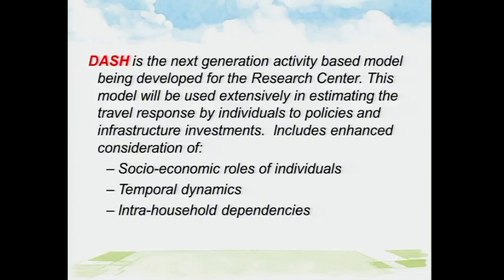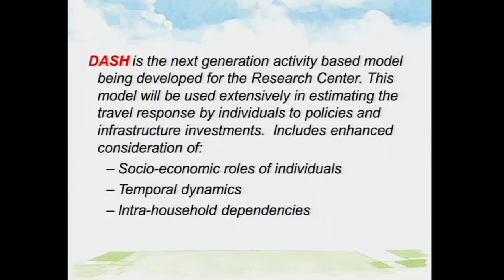Here's a pretty long overview of what DASH is all about, but what I really want to focus on is those three last bullets. Those are the three things that really distinguish this new generation of models from past practice. The first is the socio-economic roles of individuals. Activity-based models are all about modeling the travel for individuals. Past models have been at the household level. Now we're drilling down, focusing much more on individuals. Each of us are different — we have different roles in life, different economic situations, different auto-ownership situations, different environments, and different relationships. They affect how we choose to travel and the kind of things we do during the day.